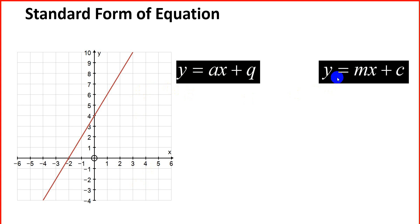We're used to this formula, but remember m stands for gradient — it's just a letter. I can replace m with any letter. In this case, we can also write it as ax plus q, where a represents the gradient and q represents your constant. So the equation of a straight line can also appear in the form y equal to ax plus q. What tells us it's a straight line is that we have x to the power of 1.